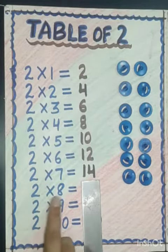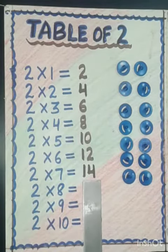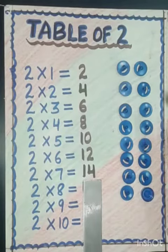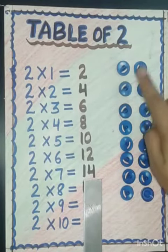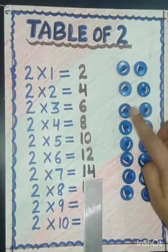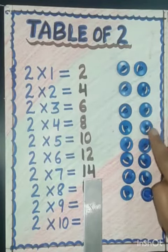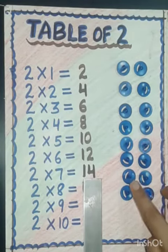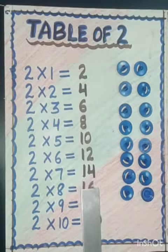Next is two eights are — again we will add two. Let's count: 1, 2, 3, 4, 5, 6, 7, 8, 9, 10, 11, 12, 13, 14, 15, 16. So two eights are 16.